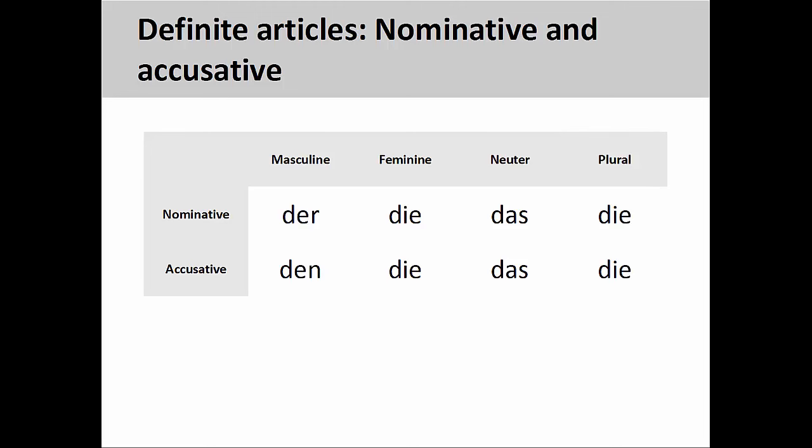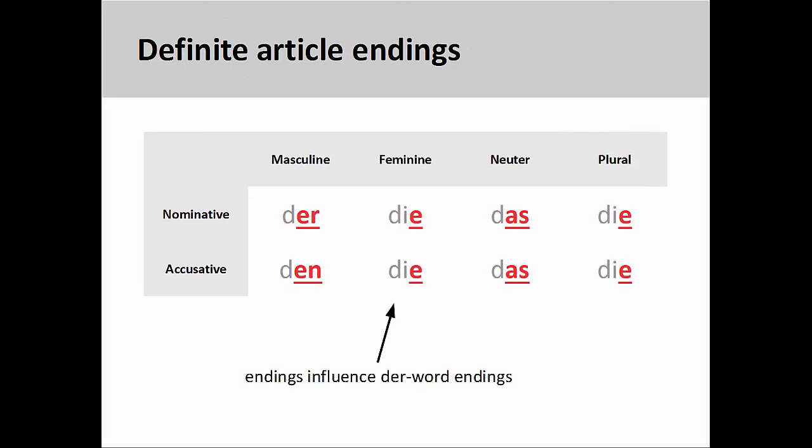In an earlier presentation, we looked at definite articles in the nominative and accusative cases. These articles form the first two rows of the chart you see on the screen. As we will see in this presentation, the endings of these definite articles will influence the endings that der-words take. In fact, der-words are so called since their endings are almost the same as the endings of definite articles.